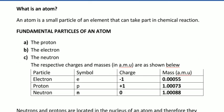What is an atom? An atom is a small particle of an element that can take part in a chemical reaction. This is the same definition as in form two. Now, fundamental particles of an atom: we have three fundamental particles - proton, electron, and neutron.